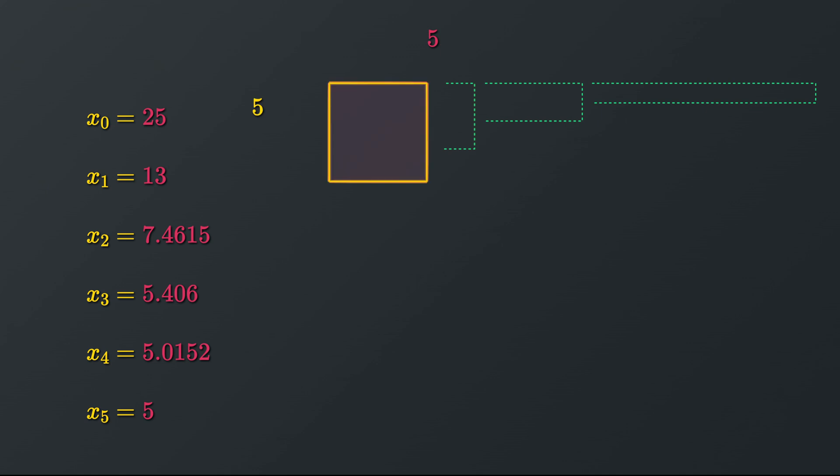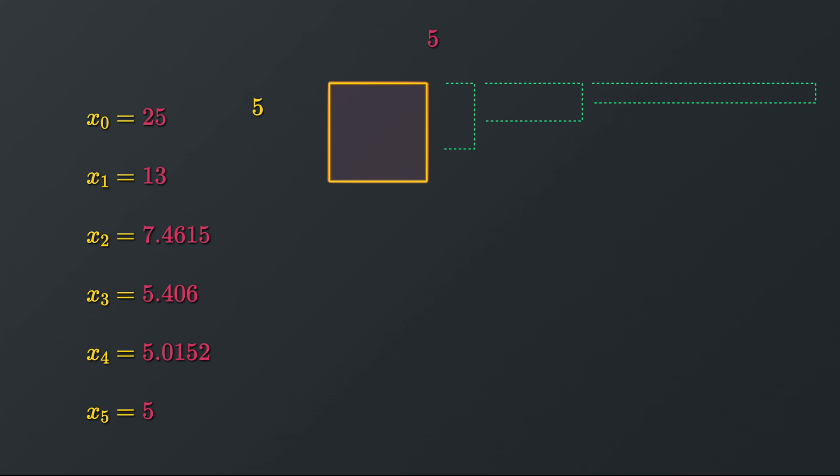In each step, one side gets shorter and the other one gets longer, making them more equal. At some point, we obtain the rectangle with four approximately equal sides, which can be considered a square.